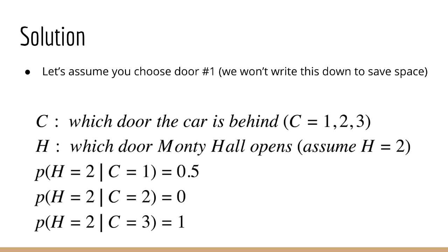Similarly, if the car is behind door number three, then Monty Hall has to open door number two because that's the only door left with a goat. That is, if C equals 3, then Monty Hall has no choice but to open door number two. So H equals 2 given C equals 3 with probability 100%.